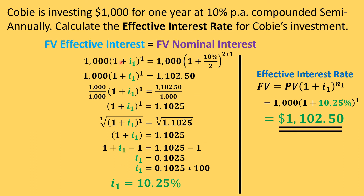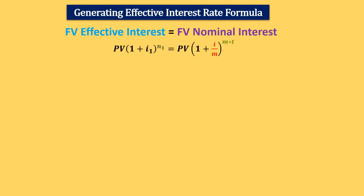Rather than going through that equation every time, we can set the equations equal to each other and find a common formula. We set the future value for effective interest rate equal to PV × (1 + i₁)^n₁, and on the other side PV × (1 + i/m)^(m×t), the nominal side.